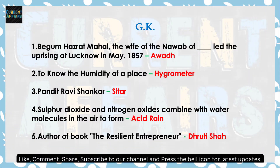Next, GK questions हैं। पहला: बेगम हजरत महल, जो wife थीं नवाब की — वो नवाब कहाँ के थे? अवध के थे। अवध के नवाब की wife थीं बेगम हजरत महल, जिन्होंने लखनऊ से 1857 की क्रांति का विद्रोह किया था।